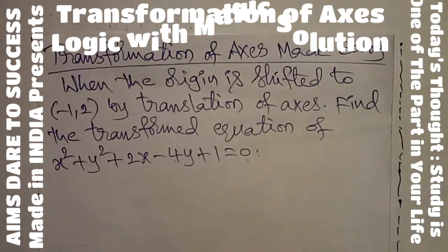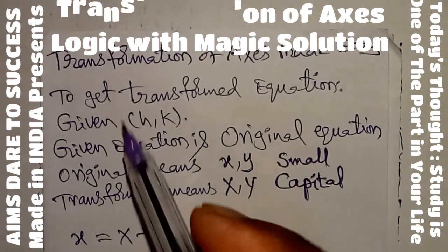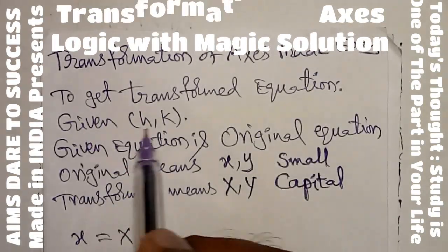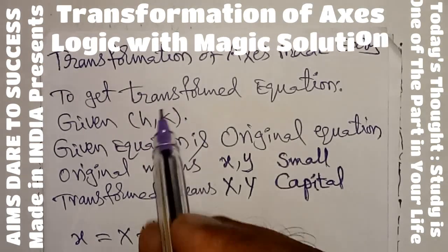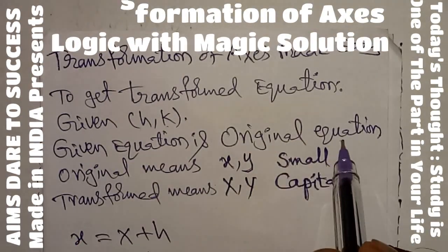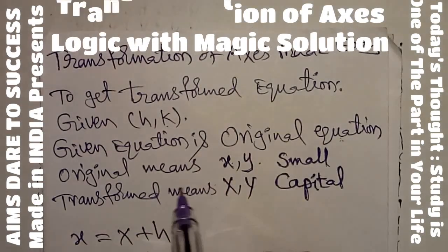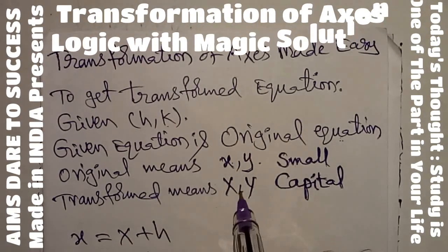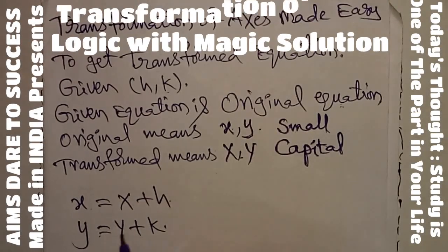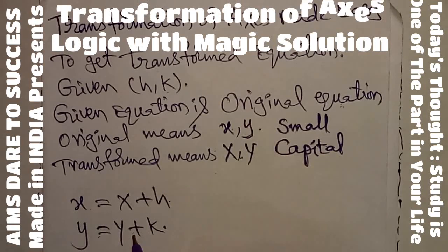Before going to the solution, I will explain one simple easy trick about this concept. Transformation of axes made easy: to get a transformed equation, given that the origin is shifted to point (h, k), the original equation has small x and small y, while the transformed equation must have capital X and capital Y. The formula is: small x = capital X + h, and small y = capital Y + k. This is a simple, sweet, and short formula.